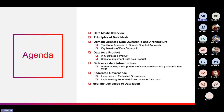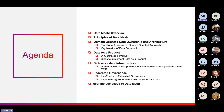Next we will see the data as a product principle — why we are treating the data as a product and not as a secondary outcome — and we will also see some steps to implement data as a product principle. After that we will see the third principle, which is the self-serve data infrastructure platform. We will understand its importance in data mesh. Then we will see the fourth principle, which is federated governance, and how we can implement federated governance in data mesh.